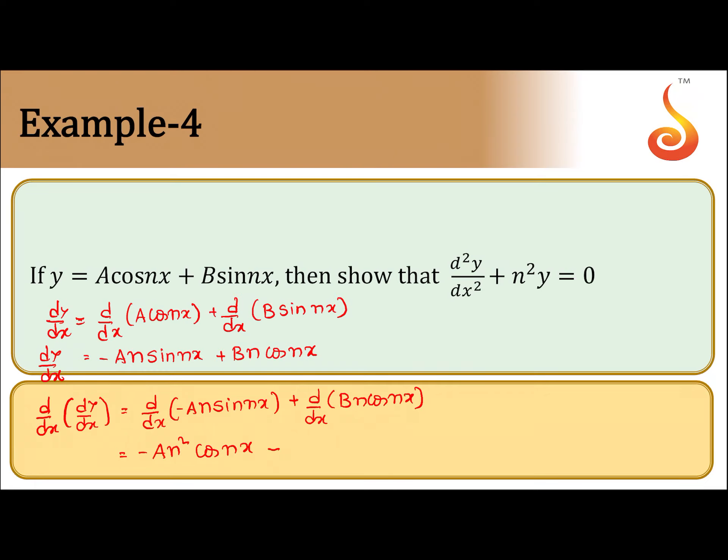Minus Bn² sin(nx), which is nothing but minus n² times y. So finally we get the required result: d²y/dx² equal to minus n²y. The same equation you might have seen in physics also, in simple harmonic motion.